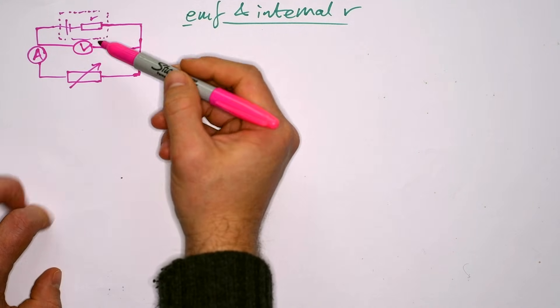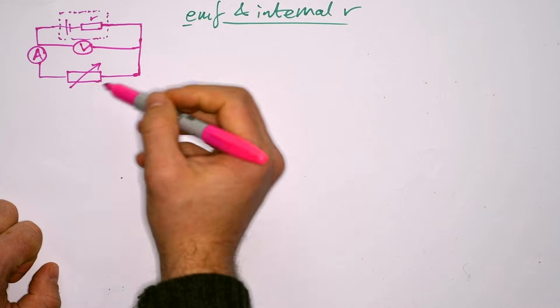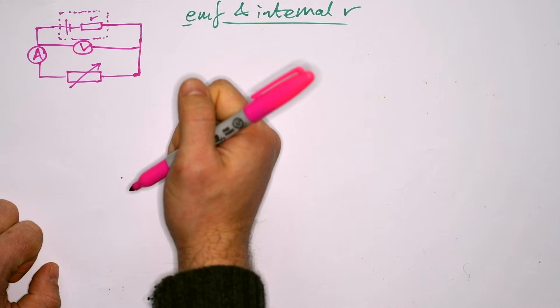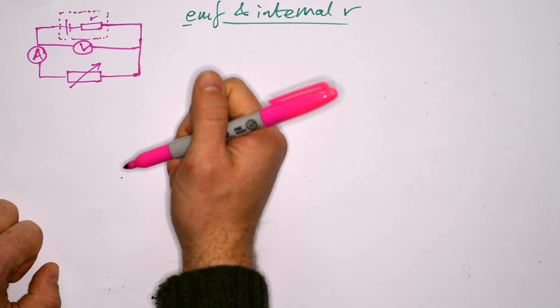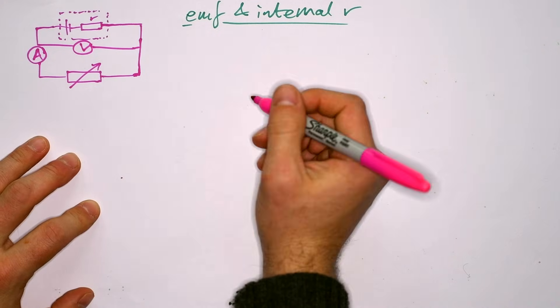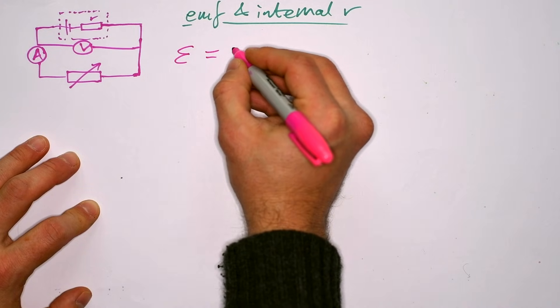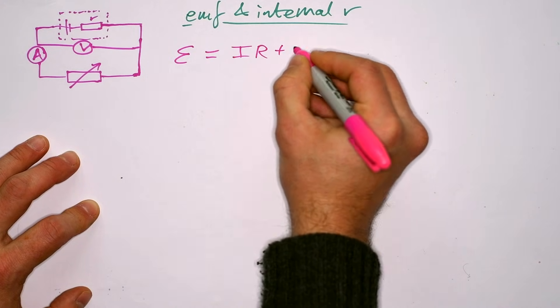If this reads 6 volts, then that means that the terminal PD is 6 volts, which means that there's 6 volts available to the circuit, which obviously means that the variable resistor gets those 6 volts. The equation for EMF and internal resistance is EMF is equal to IR plus Ir.